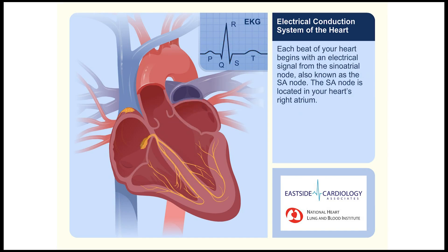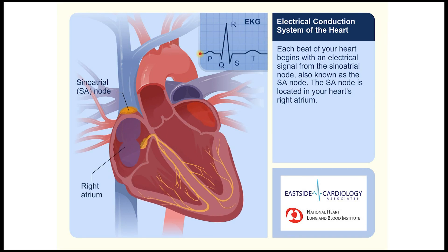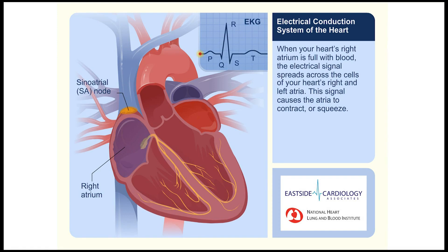Each beat of your heart begins with an electrical signal from the sinoatrial node, also known as the SA node. The SA node is located in your heart's right atrium. When your heart's right atrium is full with blood, the electrical signal spreads across the cells of your heart's right and left atria.